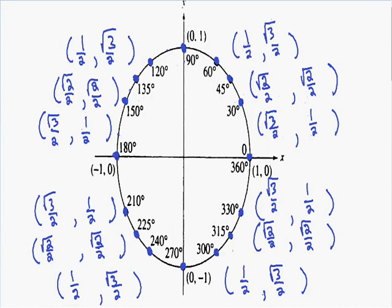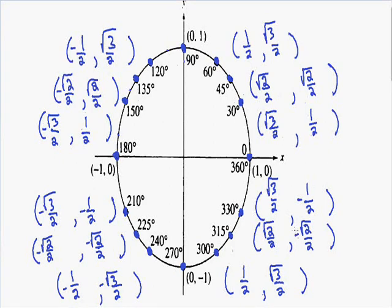Now we just need to determine if the coordinates are positive or negative. All coordinates in the top right corner are positive because they're in quadrant 1. In the top left corner the x-values are negative, so we put a negative in front of all the x-coordinates. In the bottom left corner both x and y are negative. And in the bottom right corner the y-coordinates are negative while the x-coordinates stay positive. Now we have completely finished labeling all of the points on our unit circle.